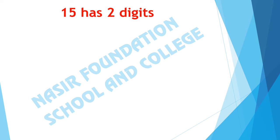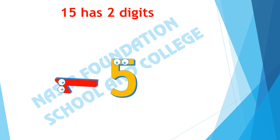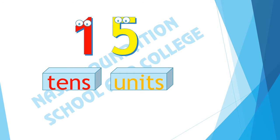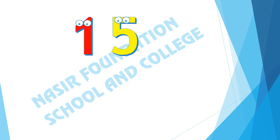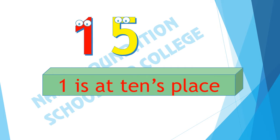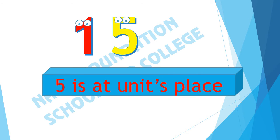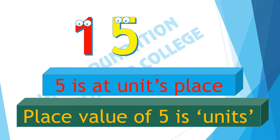15 has 2 digits: 1 and 5. The digit 1 is at the tens place, or we can say the place value of 1 is tens. The digit 5 is at the units place, or we can say the place value of 5 is units.